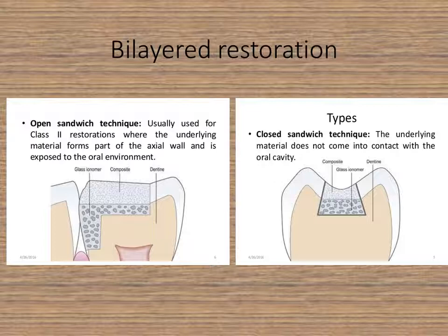Glass ionomer cement, because of its chemical bond to the tooth surface and its antibacterial effect due to fluoride, is the only restorative material known to man that chemically bonds to tooth structure while also providing an antibacterial effect — which is why another name for glass ionomer cement is 'man-made dentine.' That is an interesting trivial fact.